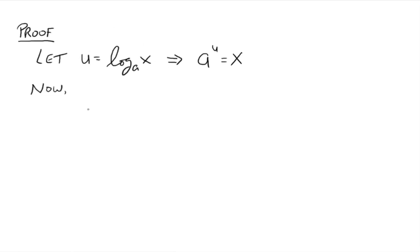So now we can use that other property that says that if A to the U is equal to X, then the log base B of A to the U is equal to the log base B of X. Remember that property? So if two things were equal here, then the log of both, you can essentially take the logarithm of both sides.